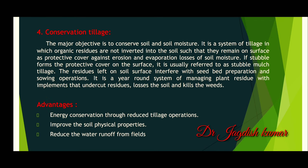The fourth type is conservation tillage. The major objective is to conserve soil and soil moisture. It is a system of tillage in which organic residues are not inverted into the soil; they remain on the surface as a protective cover against erosion and evaporation losses of soil moisture. If they form a protective cover on the surface, it is usually referred to as stubble mulch. It is a year-round system of managing plant residues with implements that undercut residue, conserve soil, and kill the weeds. The advantages of conservation tillage are: 1. Energy conservation through reduced tillage operations. 2. Improved soil physical properties. 3. Reduced water runoff from the field.